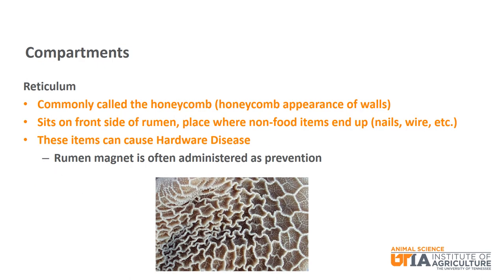The second compartment is the reticulum. It is commonly called the honeycomb because of the honeycomb appearance of the reticulum wall. The reticulum sits in front of the rumen and is the place where non-food items end up after being ingested. This could include nails, wire, and other hardware items. These items can puncture the reticulum wall and cause hardware disease, which could lead to death. Magnets are commonly administered to cattle as a prevention for hardware disease.